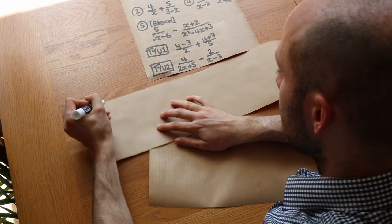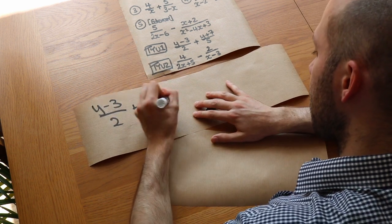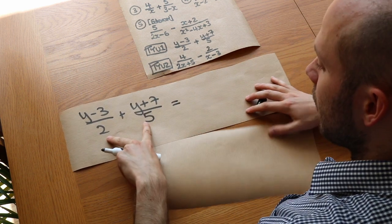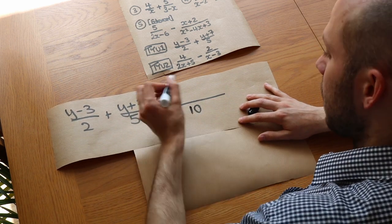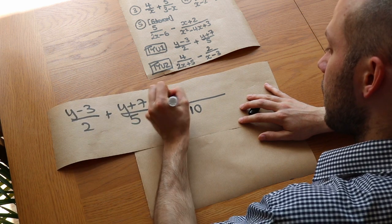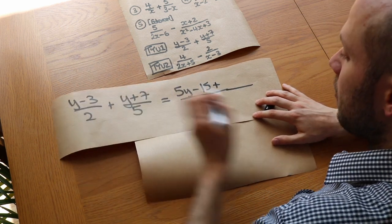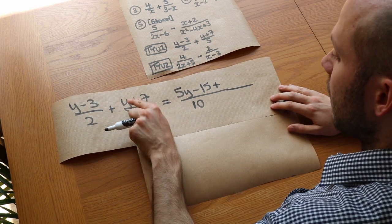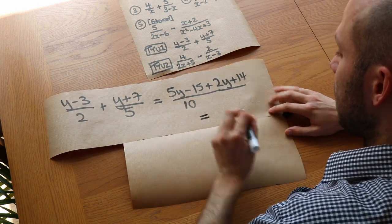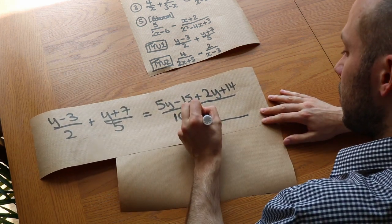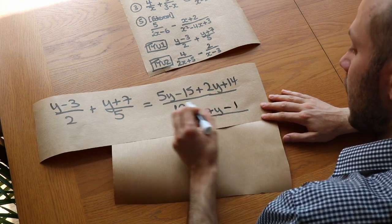Let's do the first one: (y−3)/2 plus (y+7)/5. We multiply the denominators, so it's over 10. This first numerator gets multiplied by 5 — doing it in my head: 5y minus 15. Then we've got plus, and then 2 times (y+7), which is 2y plus 14. Simplifying the numerator by collecting like terms: 5y plus 2y is 7y, and minus 15 plus 14 is minus 1. So the answer is (7y−1) over 10.